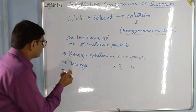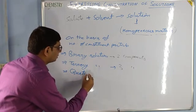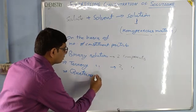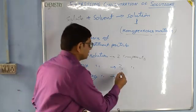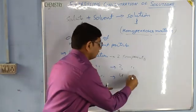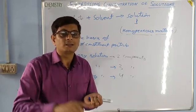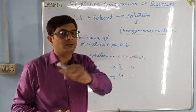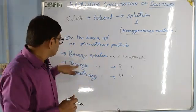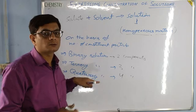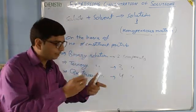Now we are having one more — quaternary solution. What does it state? It states that it consists of four substances or four components: two types of salt, sugar, and water or any other soluble substance. So binary, ternary, quaternary solution — these are the types of solution on the basis of number of constituent particles.